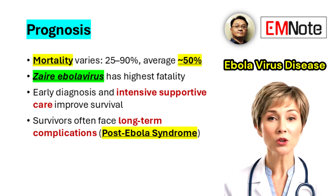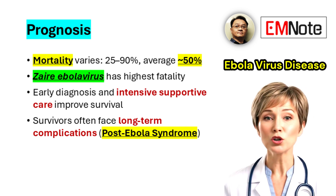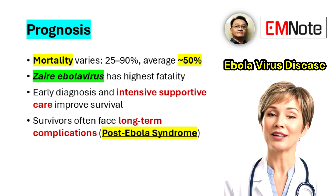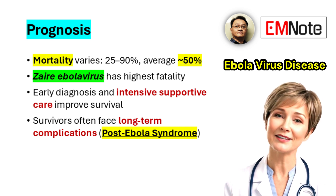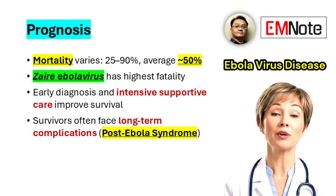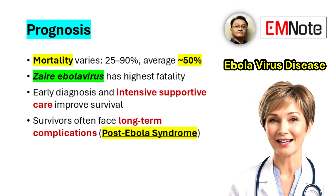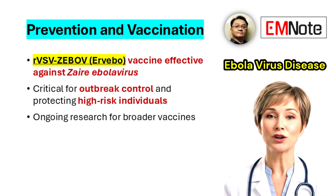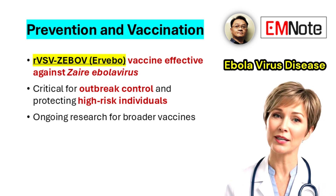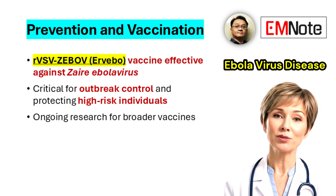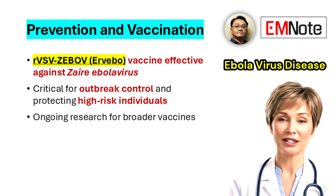Survivors often face a prolonged recovery period and may develop post-Ebola virus syndrome, characterized by fatigue, musculoskeletal pain, headaches, visual problems, hearing loss, neurological symptoms, and psychological disorders such as depression and anxiety. Persistent viral presence in immune-privileged sites, particularly in semen, can last for several months after clinical recovery, posing a risk of sexual transmission.